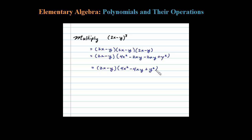What's left here is a binomial times a trinomial, so let's go ahead and distribute again. 2x times 4x squared is going to be 8x to the third minus 8x squared y and then plus 2xy squared.